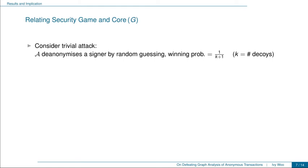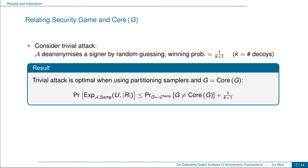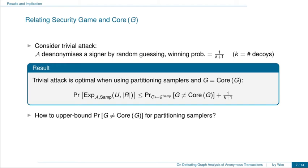Our first result relates the security game we introduced to core(G). Consider the trivial attack, where the adversary de-anonymizes a signer by random guessing, with winning probability equal to 1/(K+1), where K is the number of decoys. We proved that this trivial attack is optimal when using partitioning samplers and G equals core(G), in the sense that the adversary's winning probability is upper bounded by Pr[G ≠ core(G)] plus 1/(K+1). In other words, if G must equal core(G), the adversary cannot do better than random guessing. To upper bound the adversary's winning probability, it remains to upper bound the probability of G not equaling core(G).